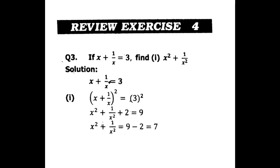The left-hand side is an identity so you expand it: x squared plus one over x squared plus two equals three squared, which is nine. Taking two to the other side, it will subtract over there. That becomes nine minus two equals seven.